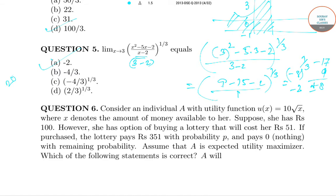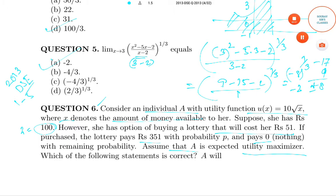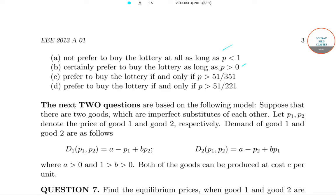Now I am starting with question number six. Consider an individual with a utility function where x denotes the amount of money available to her, and suppose she has x equals 100. She has an option of buying a lottery that costs her 51, and the lottery pays her 351 with probability p, and with probability 1 minus p she gets zero. Assuming she is an expected utility maximizer, the options are: not prefer to buy the lottery as long as p less than 1; certainly prefer to buy as long as p greater than 0; prefer if and only if p greater than 51 by 351; or prefer if and only if p greater than 51 by 221.